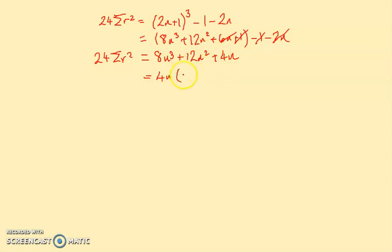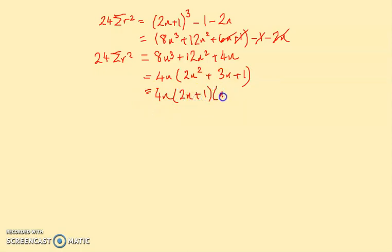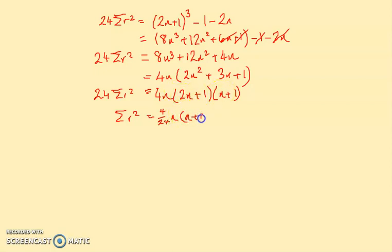This can be factorised: 4n goes into everything giving 2n² + 3n + 1, so we get 4n times that bracket. I reckon that factorises as (2n+1)(n+1), and that equals 24 sigma r squared. Since we want sigma r squared, it's (4n/24)(n+1)(2n+1), which simplifies to (1/6)n(n+1)(2n+1) — which is exactly the standard result we wanted.